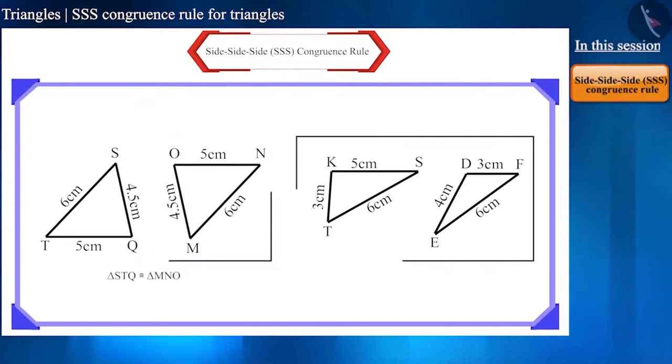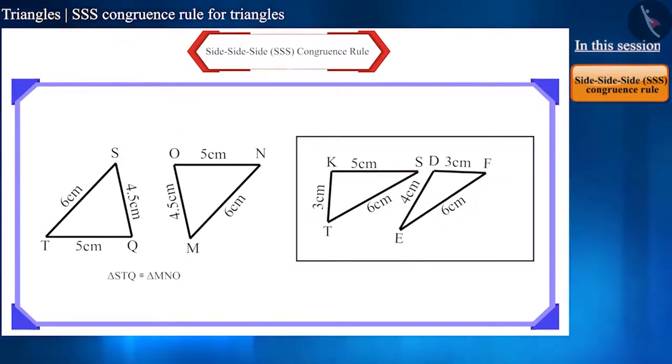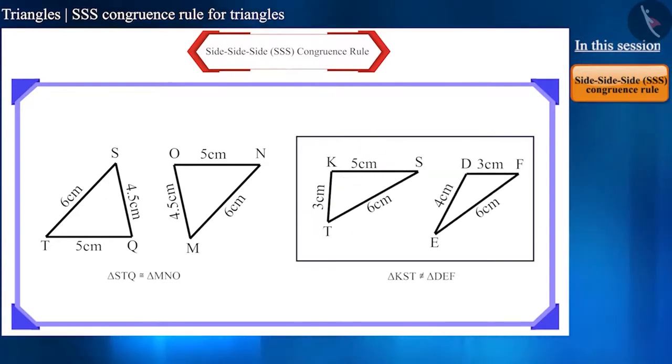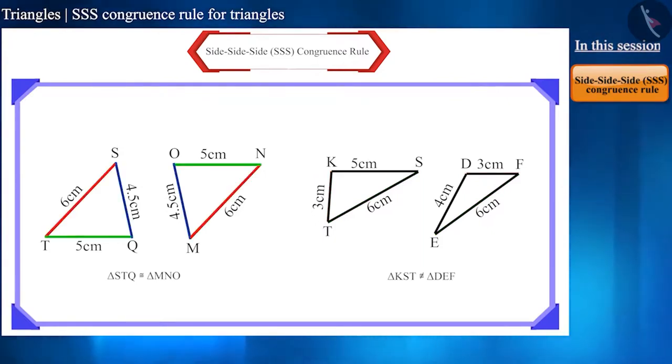In the second pair, two sides of the triangles are equal. But the third side is not equal. They don't completely cover each other. So, we can say that for two triangles to be congruent, two sides being equal is not enough. Here, for triangles to be congruent, all three sides should be equal.